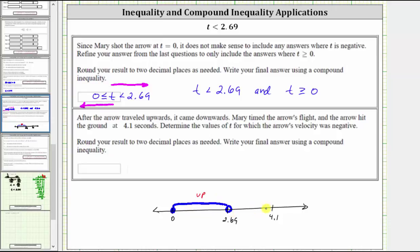Which means for the values of t between 2.69 and 4.1, the arrow must be traveling downwards. We do not include 2.69 because at t equals 2.69, the arrow reaches the maximum height at which the velocity is zero at that instant. And we also don't include 4.1 because that's when it hits the ground. Which means the velocity is negative between t equals 2.69 and t equals 4.1, not including the endpoints, or over this interval here.